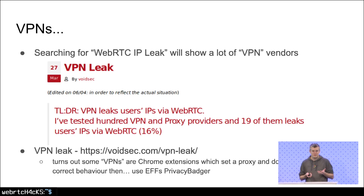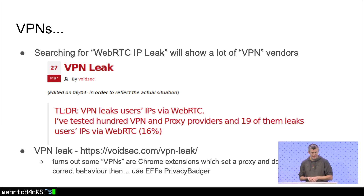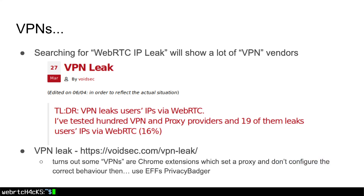If you continue searching for WebRTC IP leak stuff, the first three pages of Google results will be VPN vendors telling you what WebRTC is, why it's bad, and how they can help you avoid leaking your IP. Last year, research by the VoidSec guy showed that a lot of those VPNs still leak with WebRTC. It turns out those VPNs are just Chrome extensions which set a proxy and then forget to use the APIs available to restrict WebRTC. If you want an extension that does it right, there's uBlock Privacy Badger. But as a WebRTC developer, you will run into problems with it.